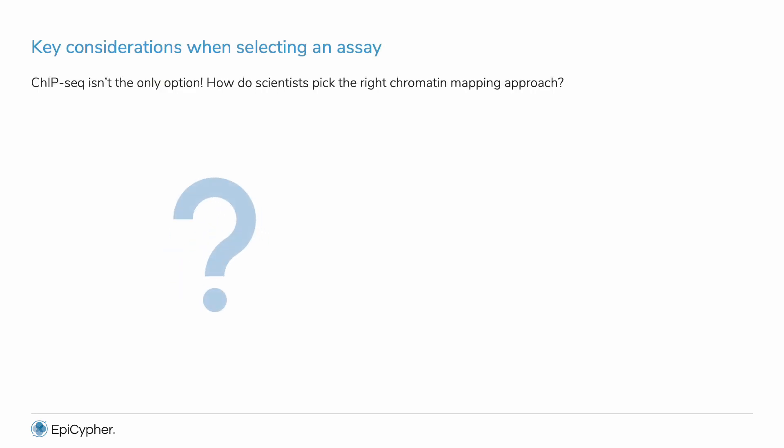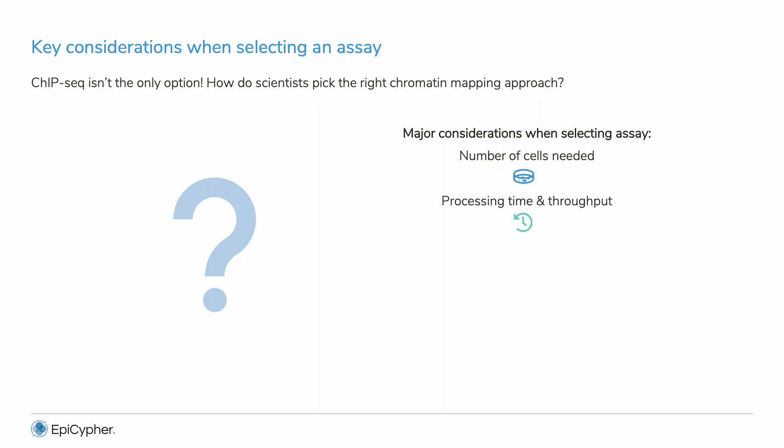We used ChIP-seq as our introductory example because it has been the standard chromatin mapping tool for many years, but it is not the only option. How do scientists select an assay for their project? It is important to think about the number of cells, as high cell requirements limit the analysis of small samples and how many targets you can map. Processing time and throughput are also key — more steps increases the risk of sample loss, makes it difficult to perform multiple reactions at one time, and slows down data generation. Simplicity of the workflow is also essential, since complicated assays lead to higher variation and more user error.